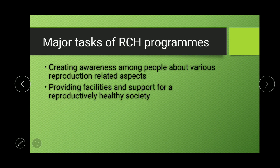The tasks of the RCH — Reproductive and Child Health Care — program include creating awareness and providing facilities and support for a reproductively healthy society. We must avoid ignorance about various reproduction-related aspects. The RCH creates awareness through audio-visual ads, print media, TV programs, radio, and newspapers.